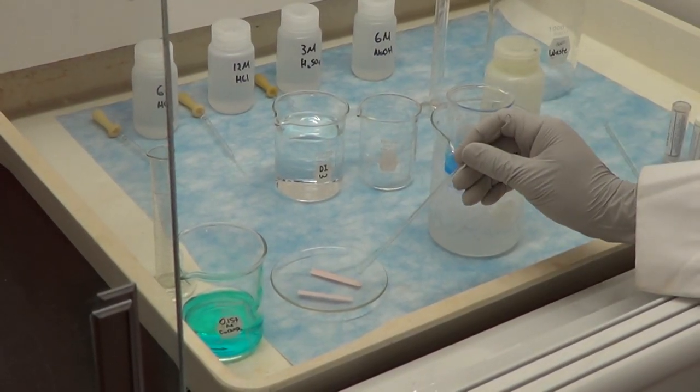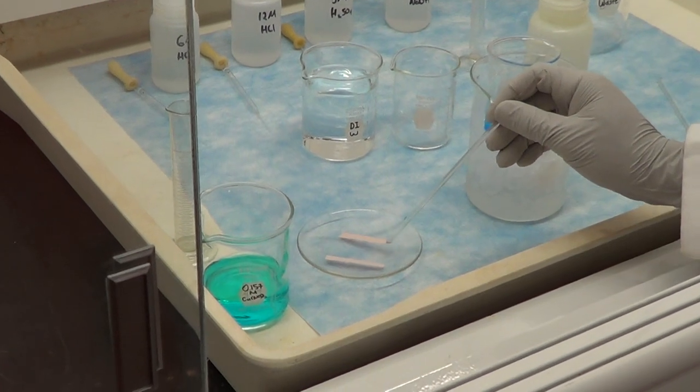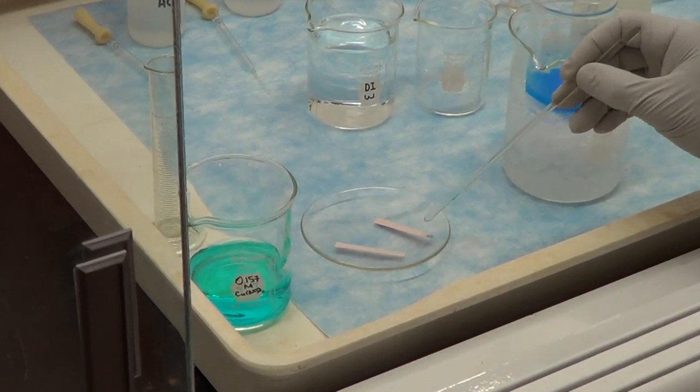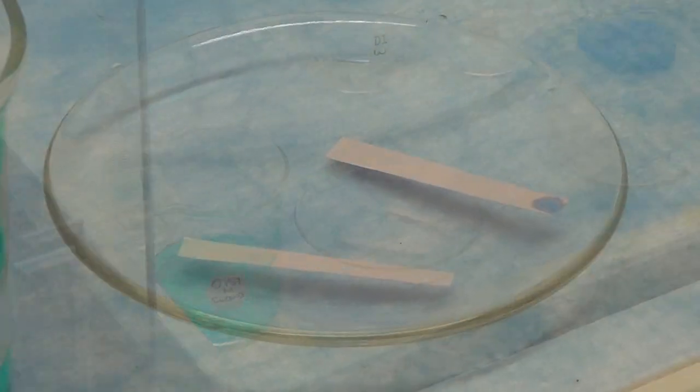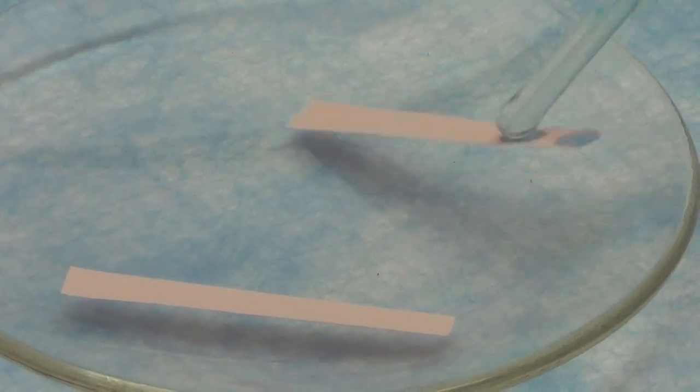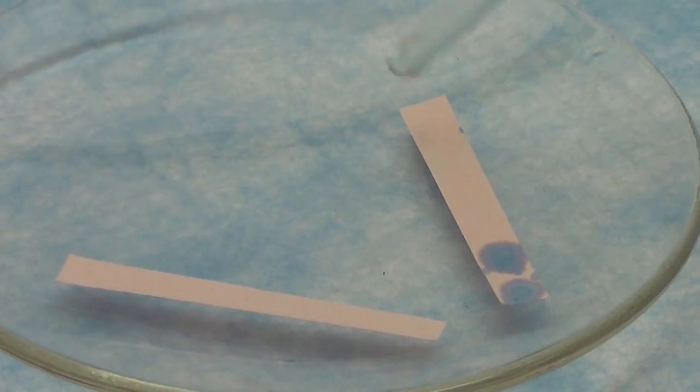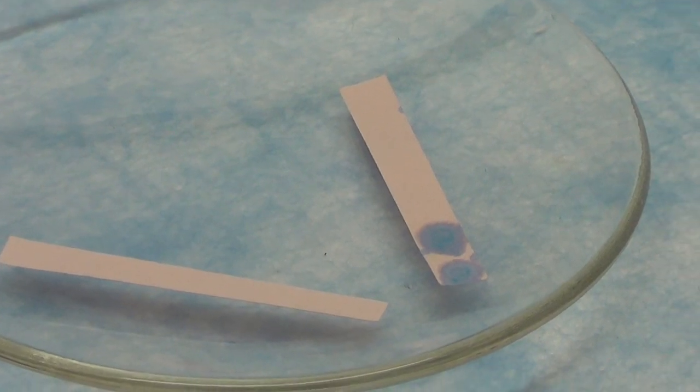We will then use the glass rod to touch the supernatant liquid and then touch the litmus paper to confirm the basicity of the supernatant liquid. The red litmus paper turns blue which confirms the basicity of the supernatant liquid and the completion of the precipitation reaction.